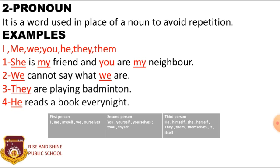I, we, you, they, he, she are examples of personal pronouns. For example: 'She is my friend and you are my neighbor.' 'We cannot say what we are.' 'They are playing badminton.' 'He reads a book every night.'